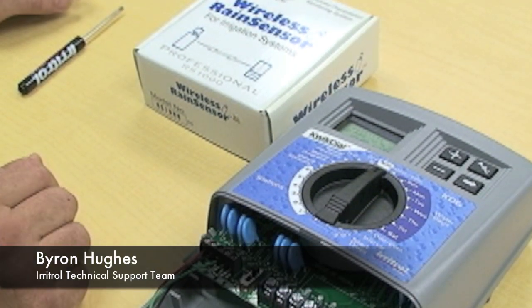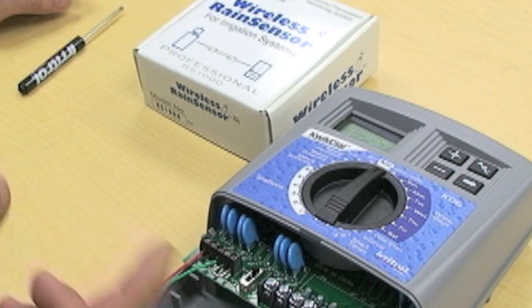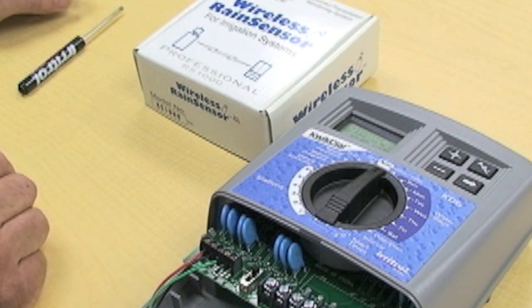My name is Byron Hughes with the Irritrol Technical Support Team. I'm going to show you how to install an RS1000 rain sensor to a controller. In this case it's going to be a Quick Dial.